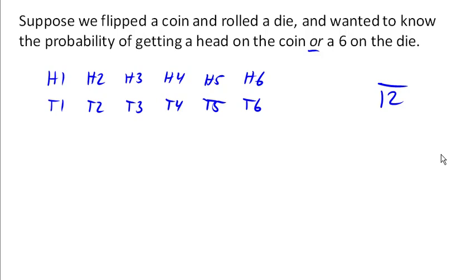How many of them have a head on the coin or a 6 on the die? And there are 1, 2, 3, 4, 5, 6, 7 outcomes that have either a head on the coin or a 6 on the die.